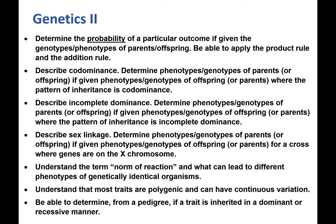Our objectives were: determining probability using the product rule and addition rule; codominance and incomplete dominance; sex-linked traits; norm of reaction due to environmental influence; polygenic traits meaning multiple genes affect a trait, usually resulting in continuous variation; and pedigrees — how to read them and determine dominant or recessive inheritance. Practice these concepts repeatedly.